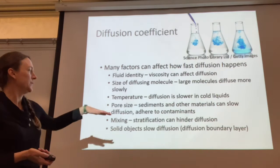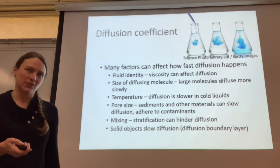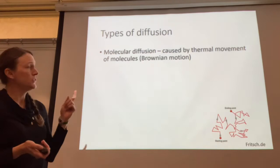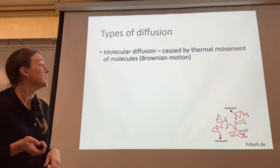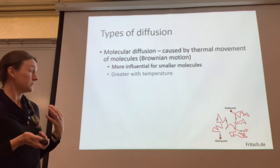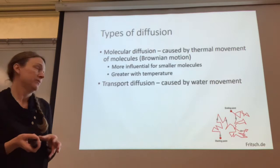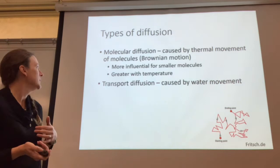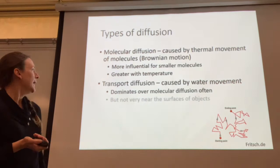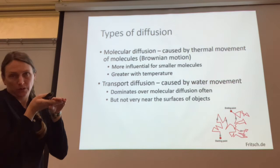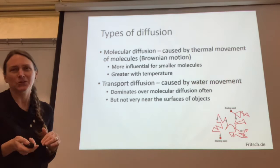A solid object getting in the way can also slow down diffusion, and there are diffusion boundary layers around solid objects, similar to flow boundary layers. There are different types of diffusion. The first is molecular diffusion, caused by the thermal movement of molecules — called Brownian motion, like a random walk. It's important for small molecules and increases with temperature. Then there's transport diffusion, caused by water movements, which dominates in flowing waters. But very close to the surface of objects, molecular diffusion may be most important because flow slows down so much near surfaces.